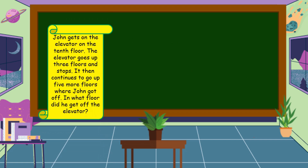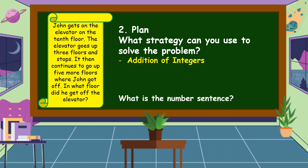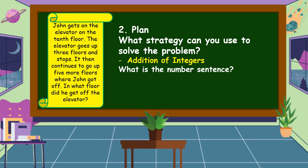Next, we are going to make a plan. What strategy can you use to solve the problem? In this problem, we are going to use addition of integers. What is the number sentence? Looking back to our problem: John gets on the elevator on the 10th floor, the elevator goes up three floors and stops, then continues to go up five more floors. So we can make a number sentence: 10 plus positive 3 — because it goes up — plus positive 5, because it continues to go up five more floors, is equal to N. This is our number sentence: 10 + (+3) + (+5) = N.